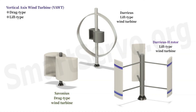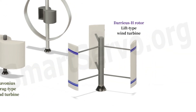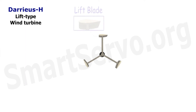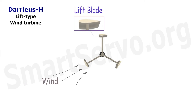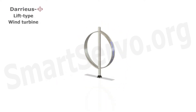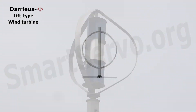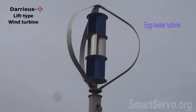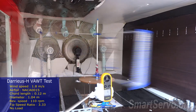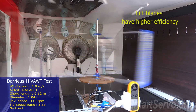The lift type vertical axis wind turbine is represented by the Darrieus wind turbine. The wind turbine is driven by the lift generated by several blades with a cross section that resembles the shape of an airfoil. There are also blades made of curved shapes like egg beaters, also known as egg beater wind turbines. When a lift type wind turbine is running, the speed of the blades can be several times higher than the wind speed.